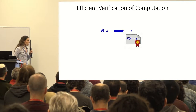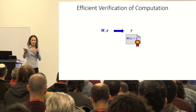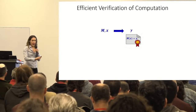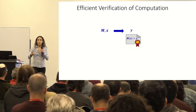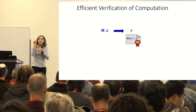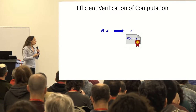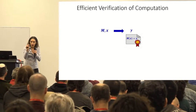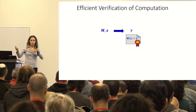Let me define this more formally. We have some computation — think of it as a Turing machine or a circuit, whatever computational model you're comfortable with. We have some computation M, say a Turing machine M, and an input X. We want to compute and produce an output Y, and with it produce a succinct certificate that certifies the correctness of the output.